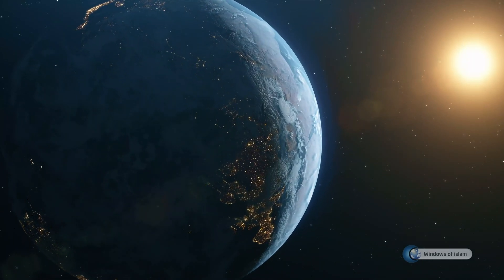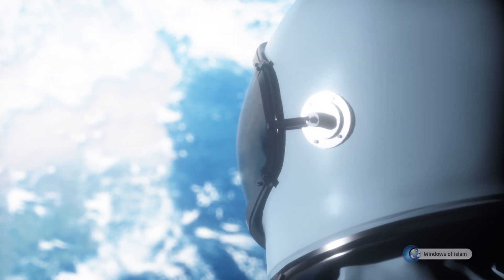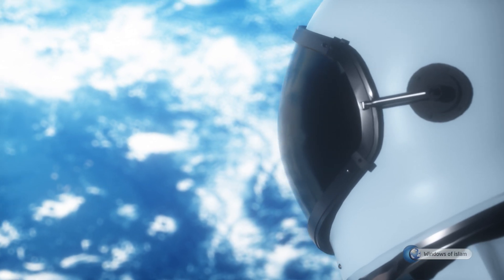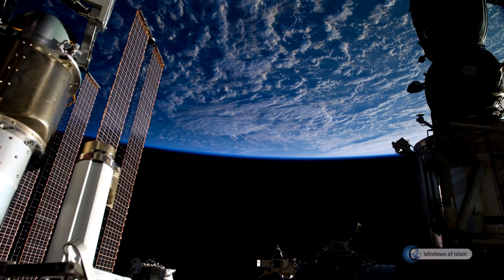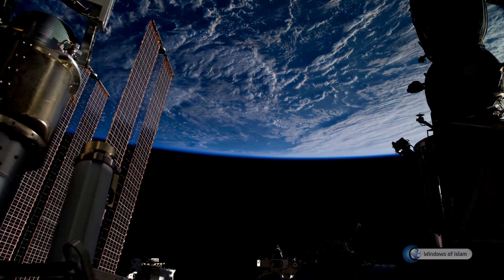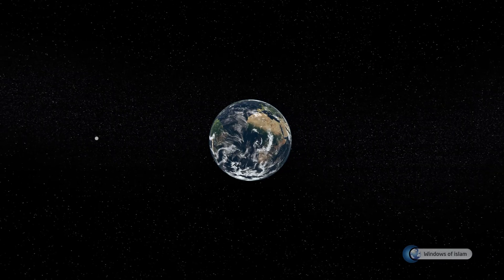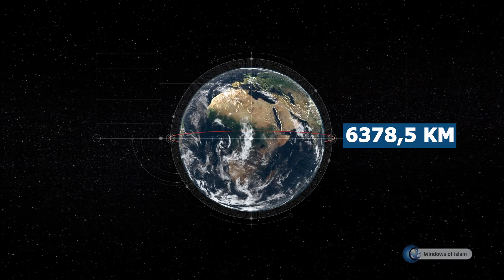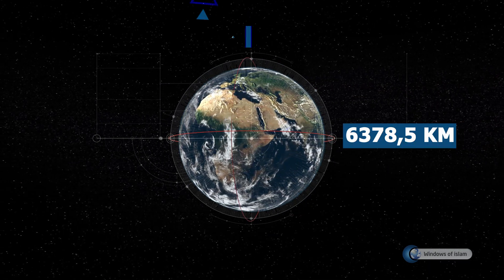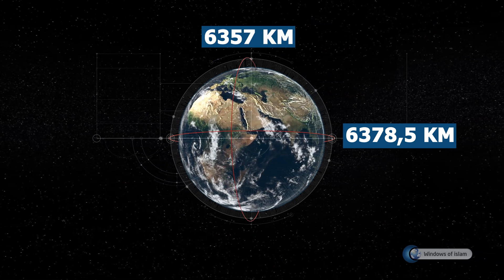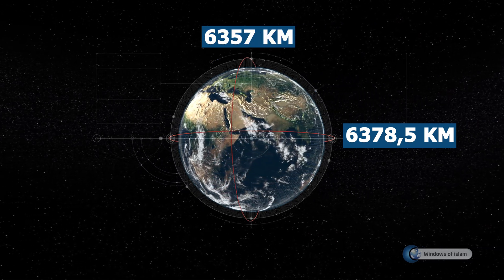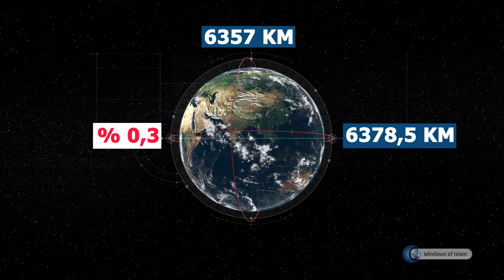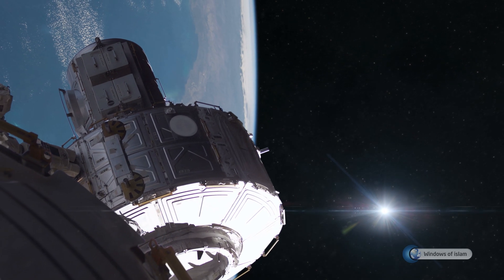Has the surface of Earth been reducing from its outlying borders, really? What can be the meaning of this reducing? What do scientists say about this subject? According to the information of NASA, while the Earth's equatorial radius is 6,378.5 km, its polar radius is 6,357 km. This means a difference of 0.3%. There is an indication of this flattening at poles in the Quran.